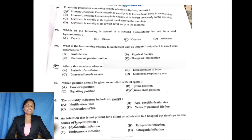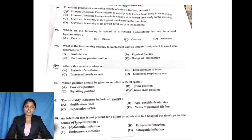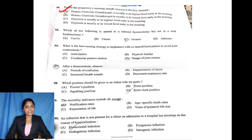Next question: To test for pregnancy, a morning sample of urine is used. It is usually at its highest concentration in the early morning. The answer is option D.